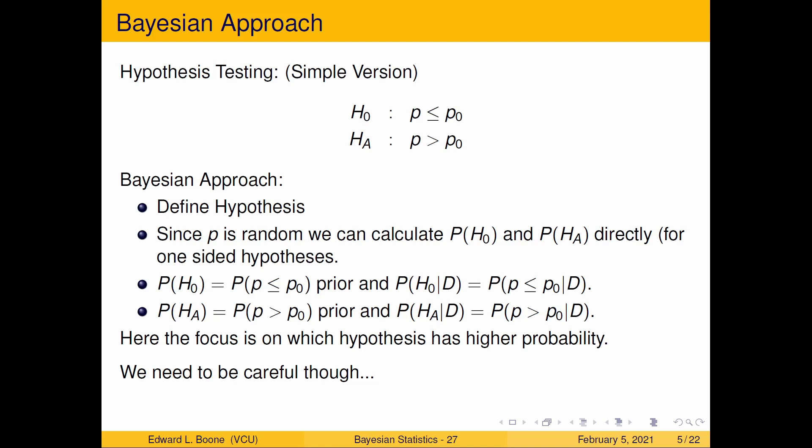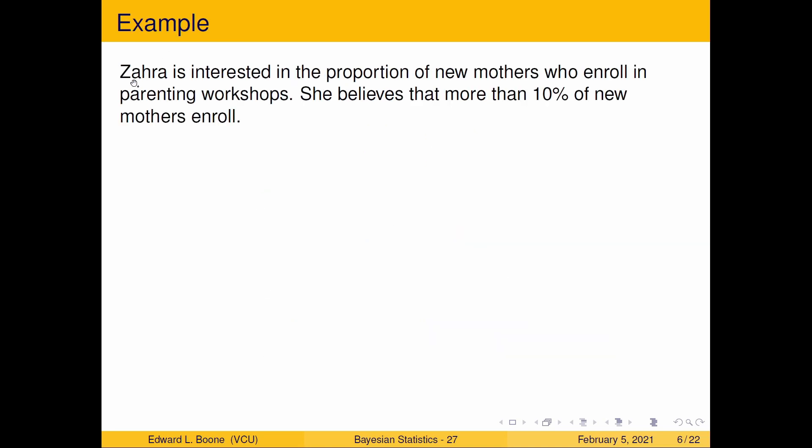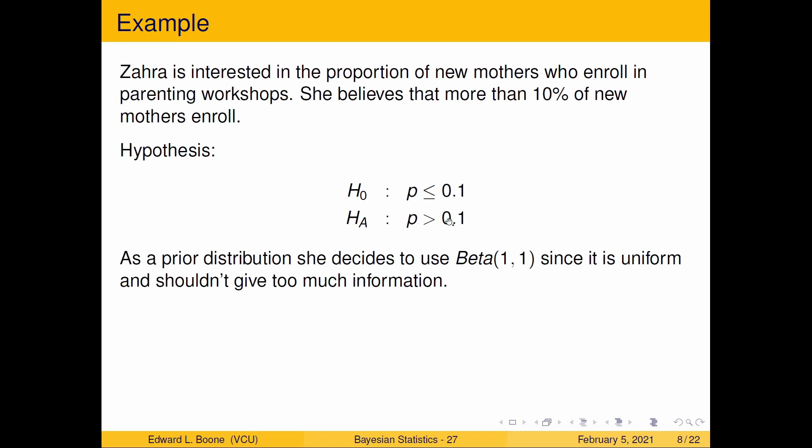Zahra is interested in the proportion of new mothers who will enroll in parenting workshops. She believes that more than 10 percent of new mothers will enroll. Here's her hypothesis: the null hypothesis is p less than 0.1, the alternative is p greater than 0.1. As a prior distribution, she decides to use a Beta(1,1) since it's uniform and shouldn't give too much information.